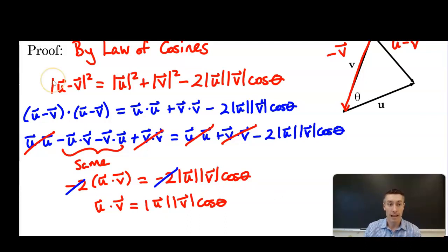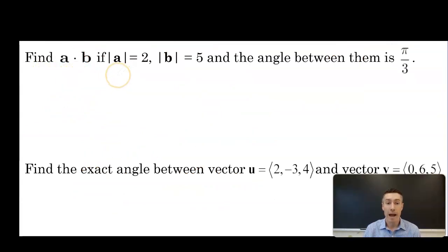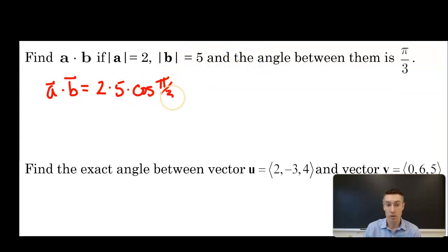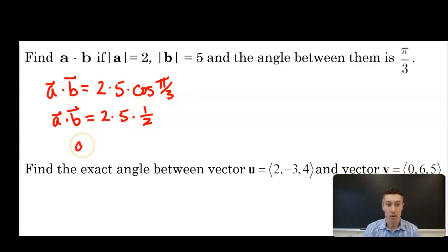Using the geometric definition: find a·b if |a| = 2, |b| = 5, and the angle between them is π/3. So a·b = 2 × 5 × cos(π/3) = 2 × 5 × (1/2) = 5. So a·b = 5.